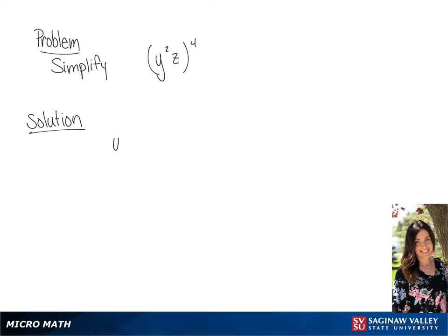We have y squared z, all raised to the fourth power. So we're going to multiply the exponents. We have y raised to 2 times 4, and z raised to 1 times 4. If we multiply this, we get y raised to the eighth power, z to the fourth.